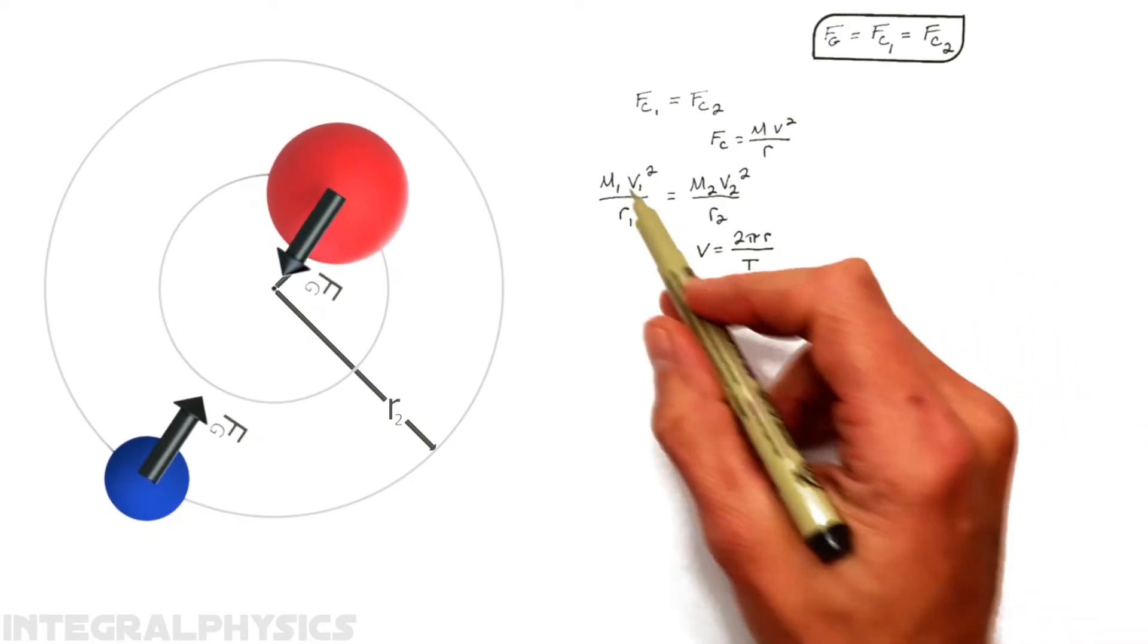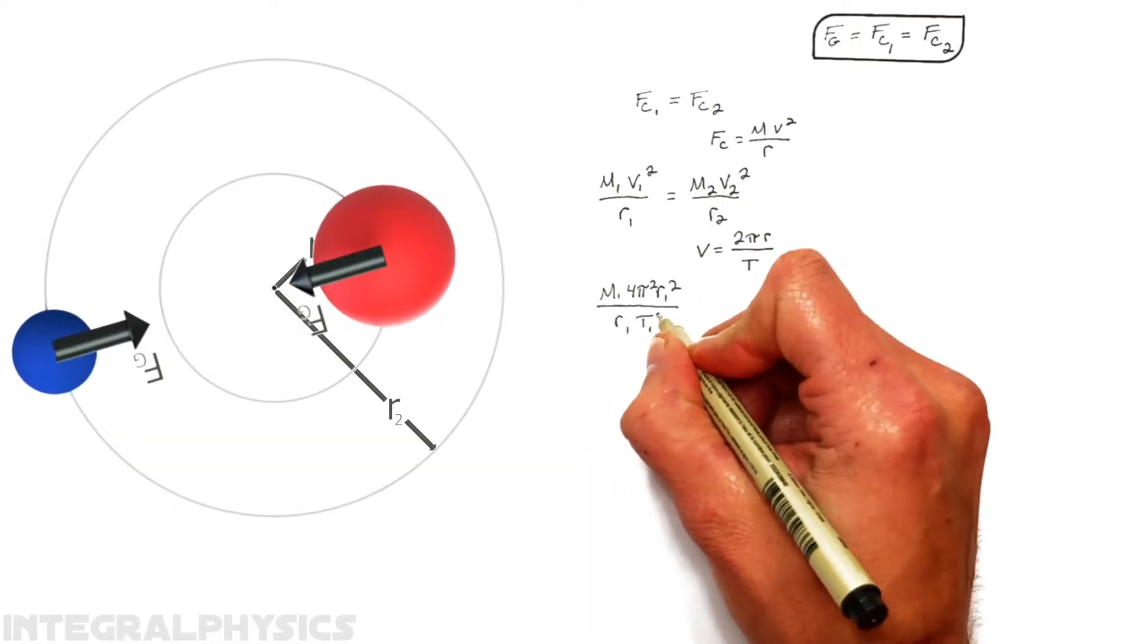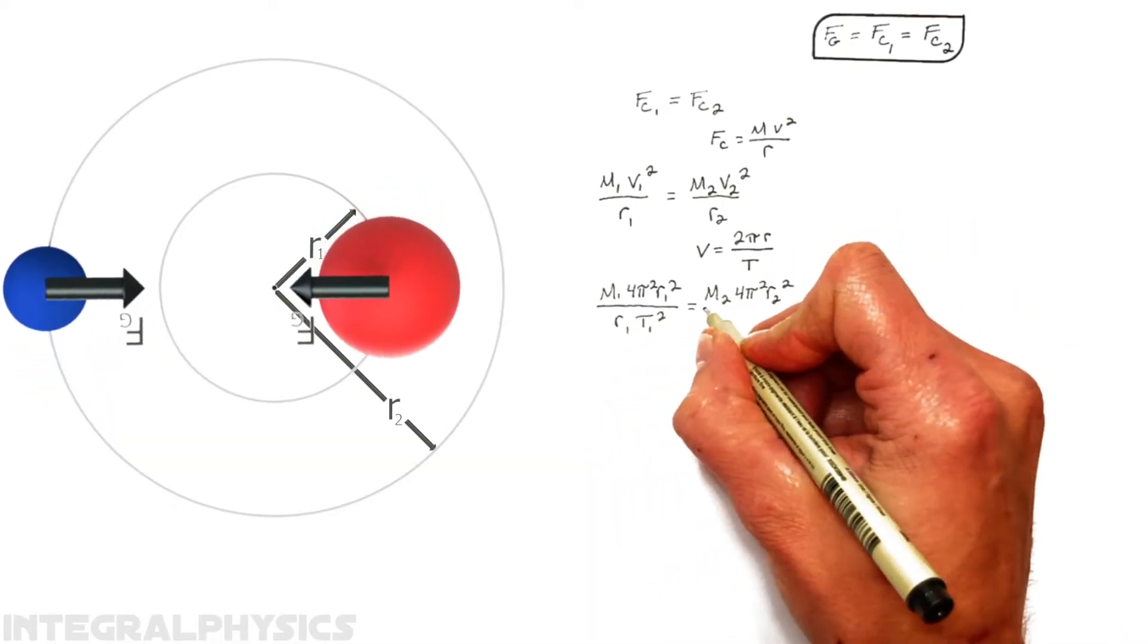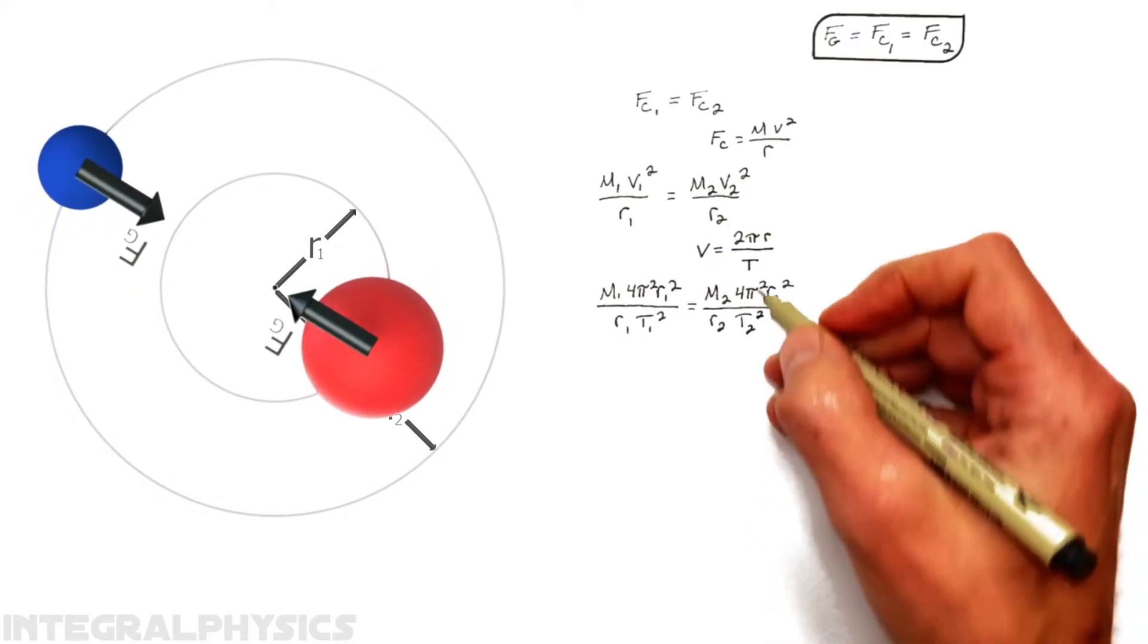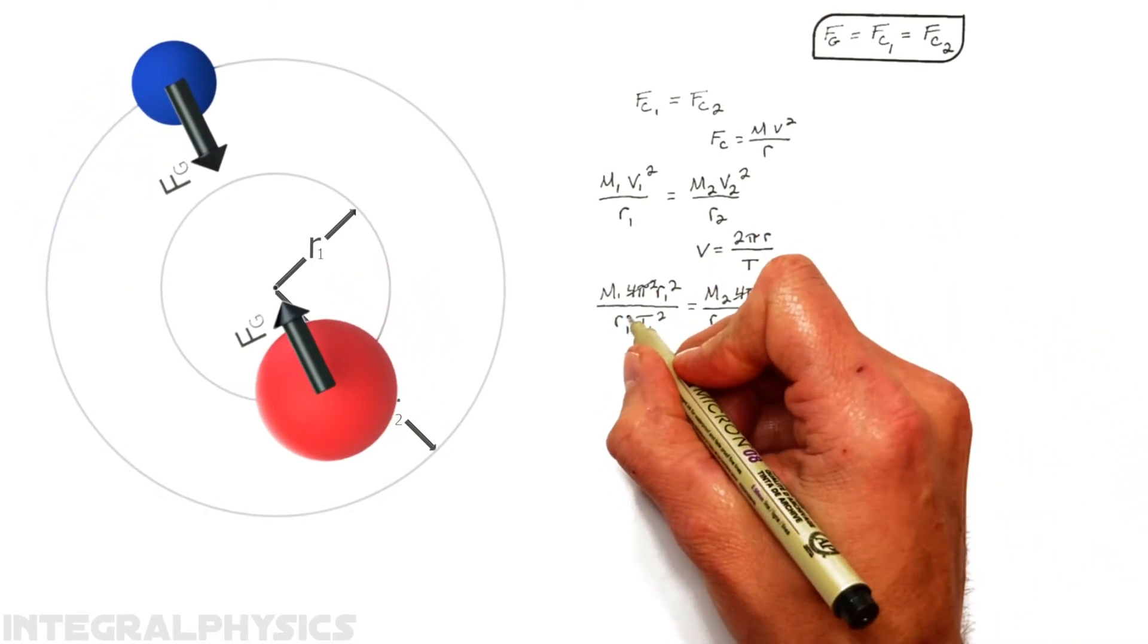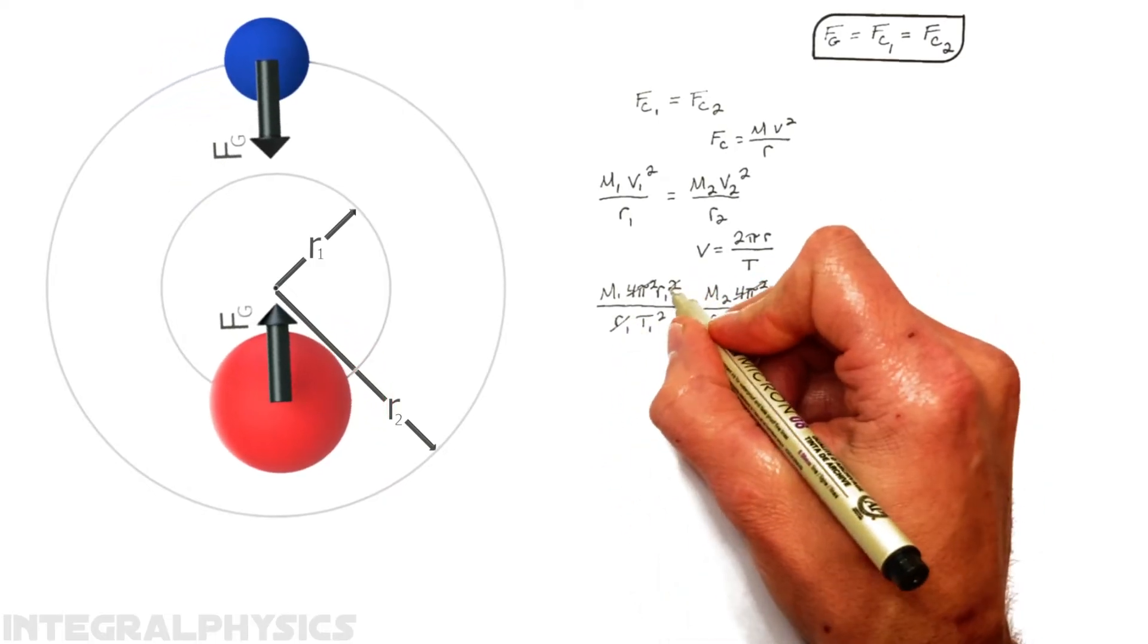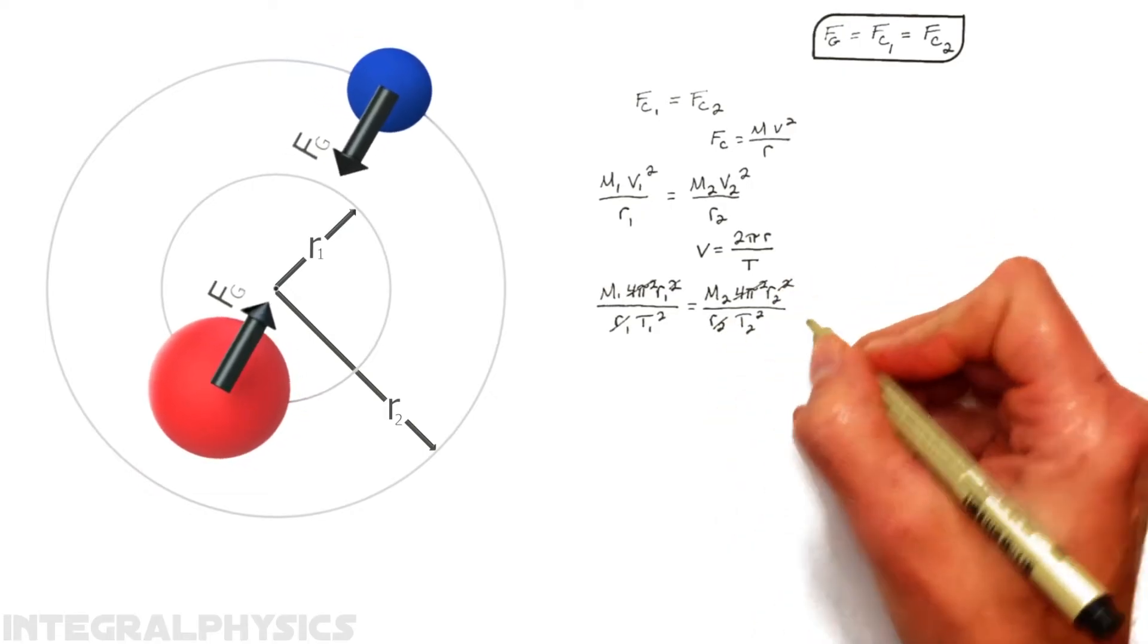Now, subbing this equation in here for v1 and here for v2, we get a pretty big equation here, but luckily, quite a bit is going to cancel out here. The 4 pi squared is on both sides, and you'll notice this r1 in the denominator partially cancels out with the r1 up in the numerator. We see the same thing over here.